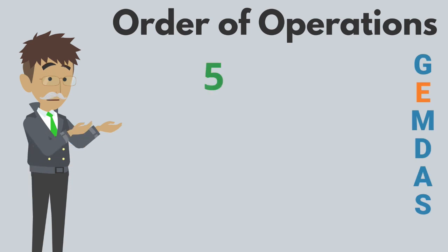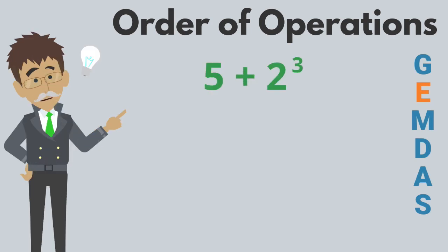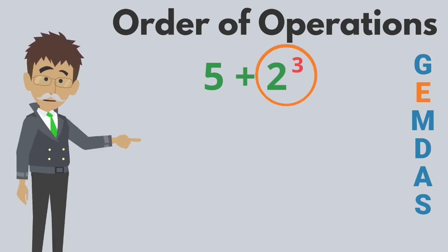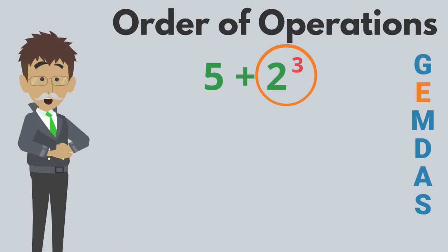Next, we deal with exponents. If you have something like 5 plus 2 raised to the third power, you first calculate 2 to the power of 3, which is 8. This expression simplifies to 5 plus 8.